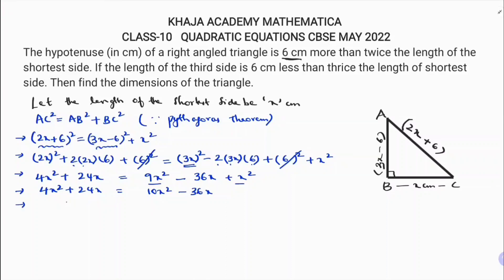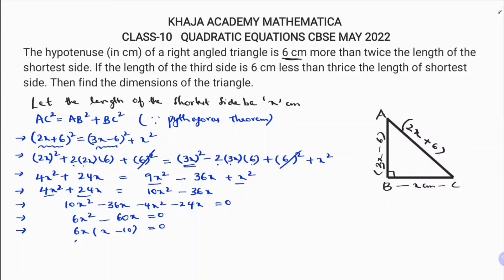Transposing terms to the right side: 10x² − 36x − 4x² − 24x = 0, which simplifies to 6x² − 60x = 0. Taking 6x as a common factor gives 6x(x − 10) = 0, so x = 0 or x = 10.